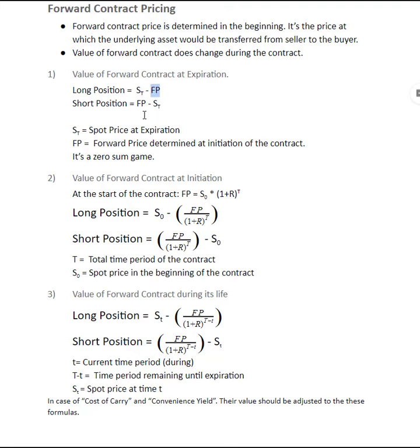So for example, the forward price was decided at $50, and at the expiration of the contract, the asset is trading in the spot market at $60. So long made a profit of $10. And since it's a zero sum game, the short will have a reverse position. So short had a loss of $10.